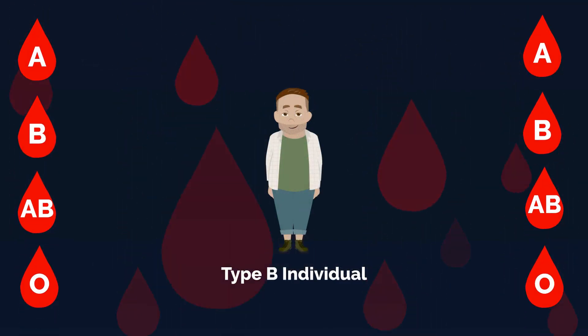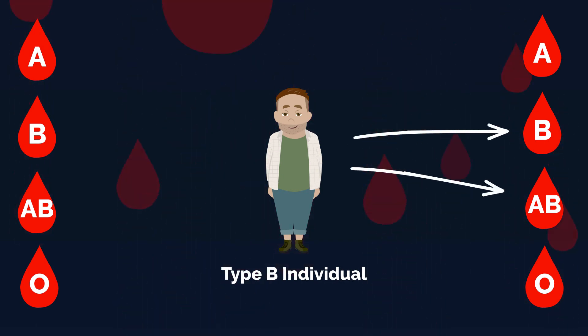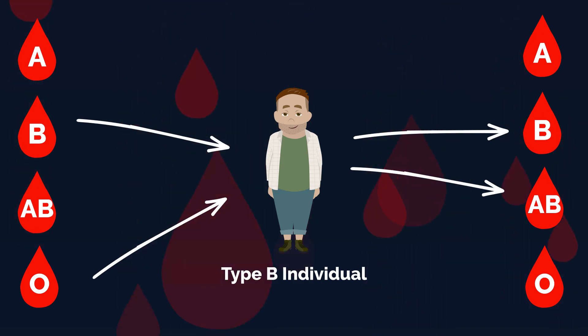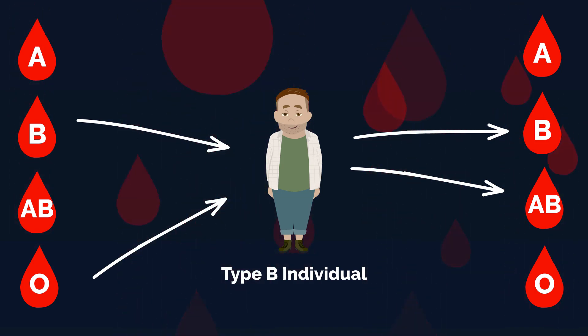Type B. Individuals with type B blood can donate to other type B individuals and also type AB individuals, but they can receive blood only from type B and also from type O.